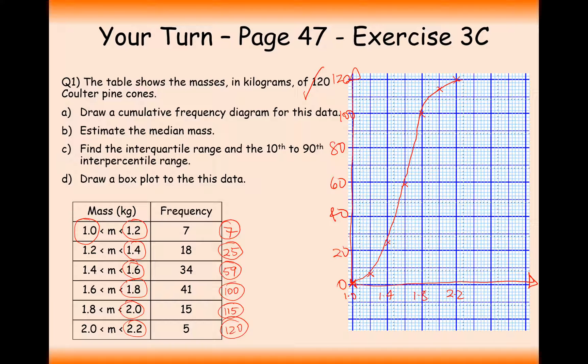Estimate the median mass. Well, what we'll do here is if we have 120, we'll go across and down. So I would say we probably have a median mass here about 1.65-ish kg.